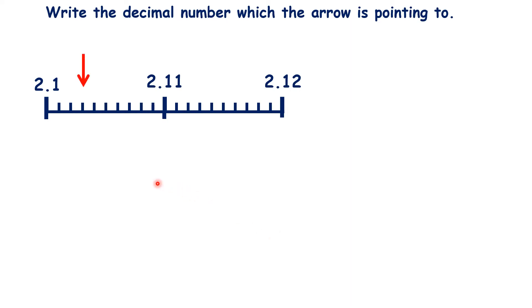So here's another number line. You might want to think about how we could change the decimals 2.1, 2.11, and 2.12 to make our number line easier to solve, and pause after each arrow to see if you can find the correct decimal number.